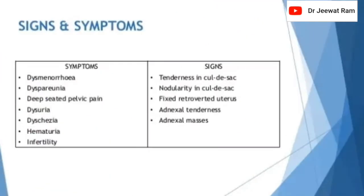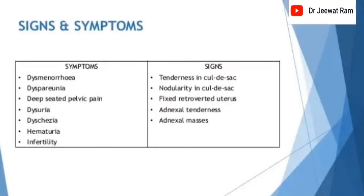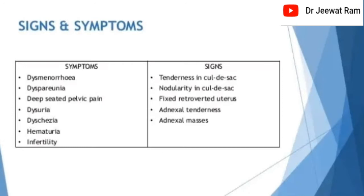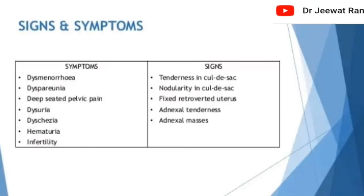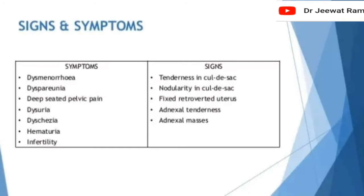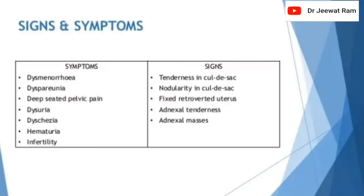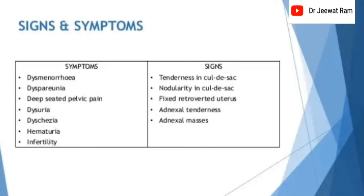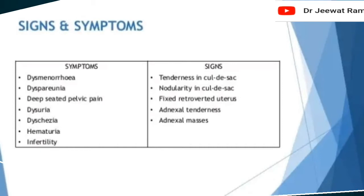Signs and symptoms of endometriosis. Symptoms: dysmenorrhea, dyspareunia, deep-seated pelvic pain, dysuria, dyschezia, hematuria, and infertility. Signs include tenderness in the cul-de-sac, nodularity in the cul-de-sac, fixed retroverted uterus, adnexal tenderness, and adnexal mass.